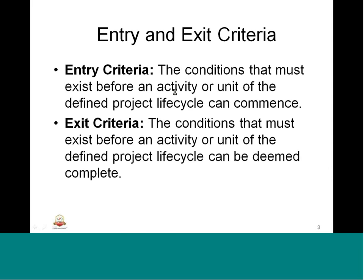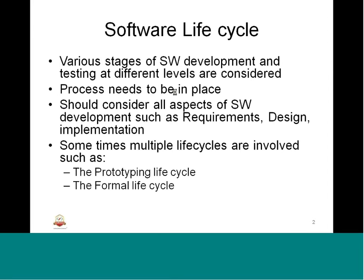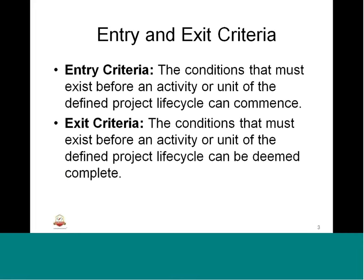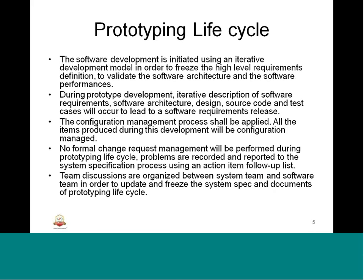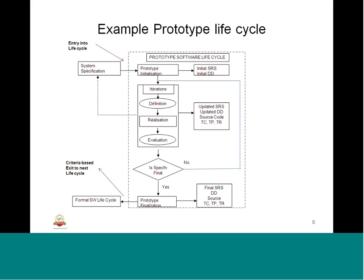We know that prototyping life cycle and formal life cycle are used in general embedded software development and testing. Typically, the prototyping life cycle looks like this — you can see a lot of blocks that are involved. There is an entry into the life cycle of the prototype and there is an exit. The dotted block is nothing but the life cycle of the prototype. It starts with some input box. Similarly, to come out of this life cycle, there is an exit mechanism at the bottom. For example: system specification, then formal software life cycle — meaning it is ready to go for the formal life cycle as the next stage.